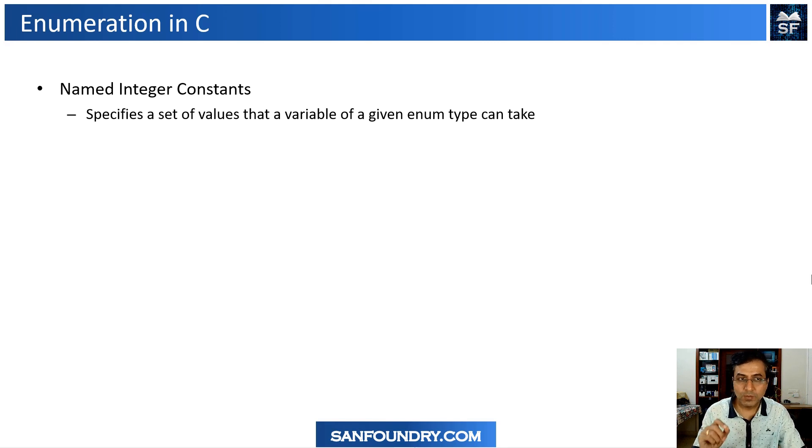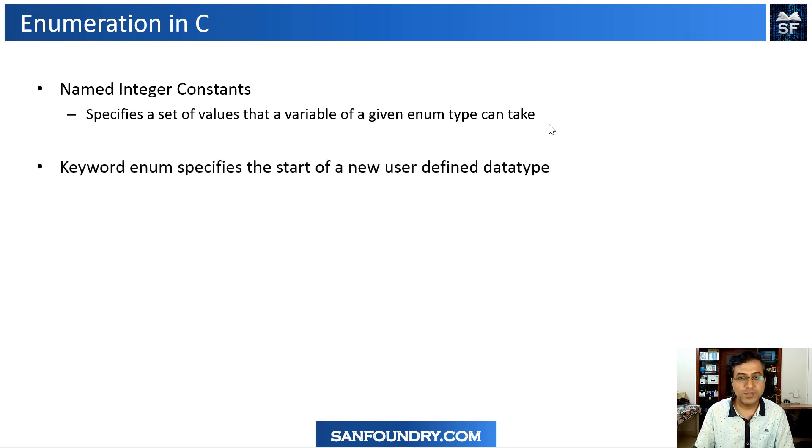When you talk about enumerations or enums in C, we are generating a sequence. Enumeration means we are enumerating it. It specifies a set of values that a variable of a given enum type can take. You declare one enum data type and then what are the integer constants - what integer values it can take. That is what an enum is.